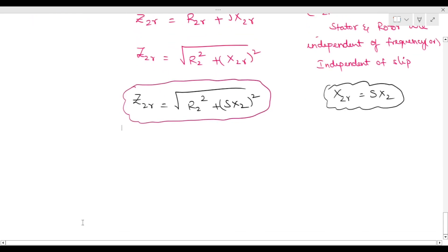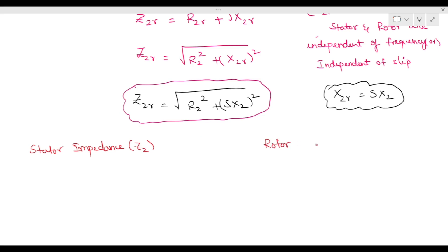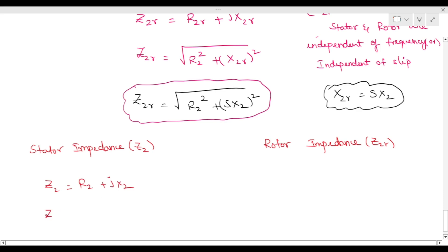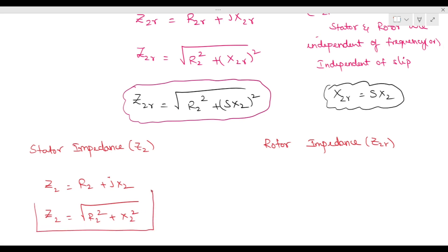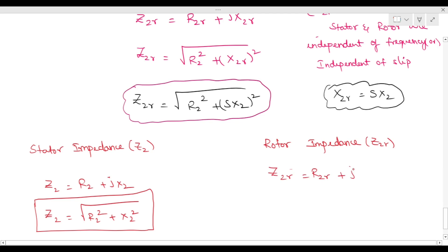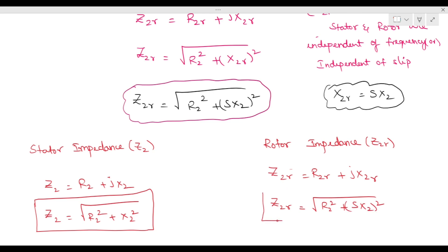We have derived two formulas: stator impedance and rotor impedance. Stator impedance is denoted by z2, where z2 = R2 + jx2 and z2 = √(R2² + x2²). Rotor impedance is denoted by z2R, where z2R = R2R + jx2R and z2R = √(R2² + (sx2)²). This is the formula for rotor impedance.